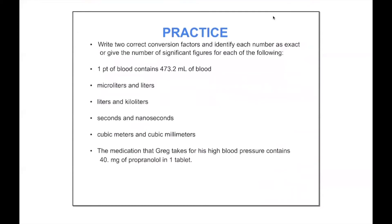For practice, we are writing the two different conversion factors from a given equality. For the first one: for every one pint of blood, we have 473.2 milliliters — that is one conversion factor. The other is that for every 473.2 milliliters, we have one pint. We can use this equality either way, because the top equals the bottom, making it equal to 1 in our dimensional analysis — we're just changing the unit.